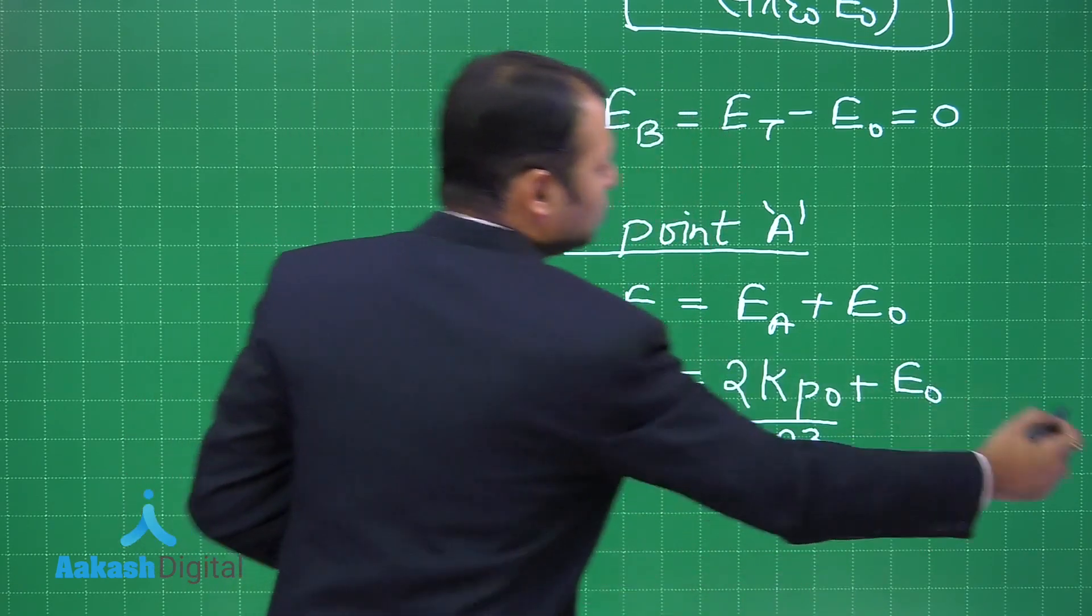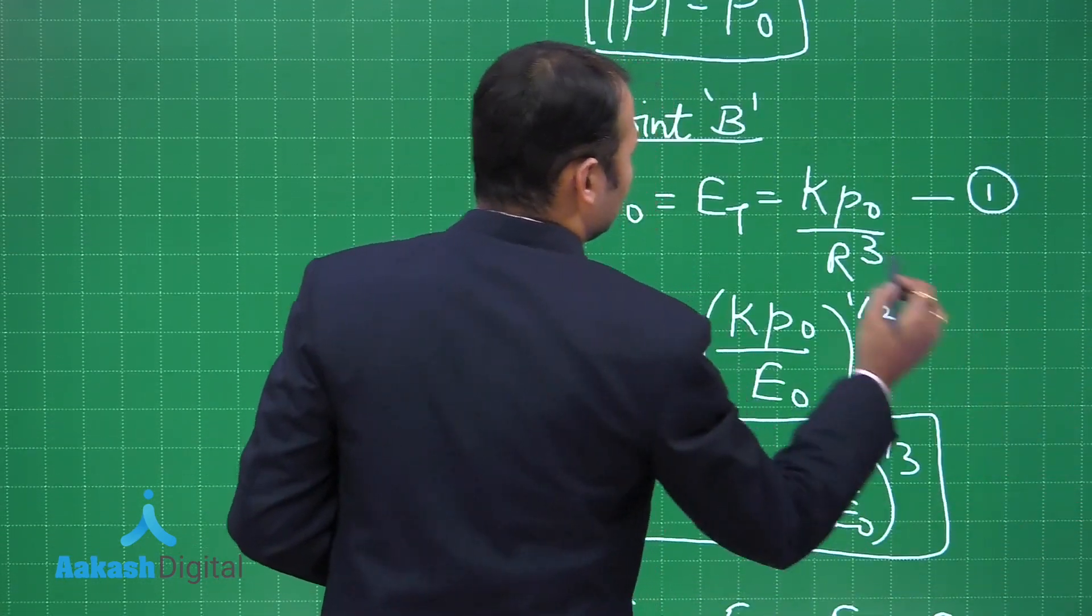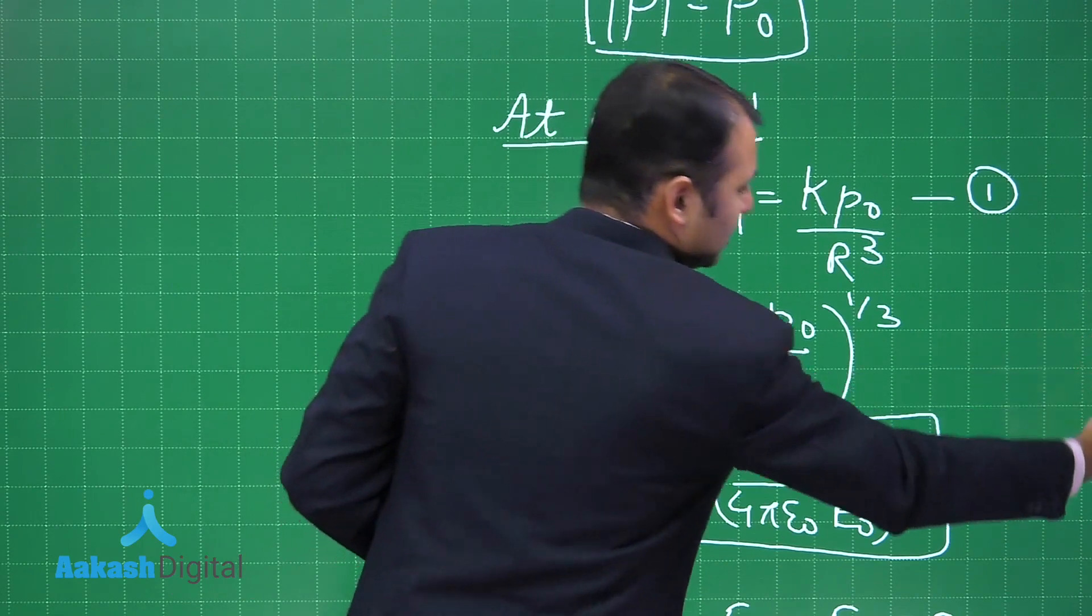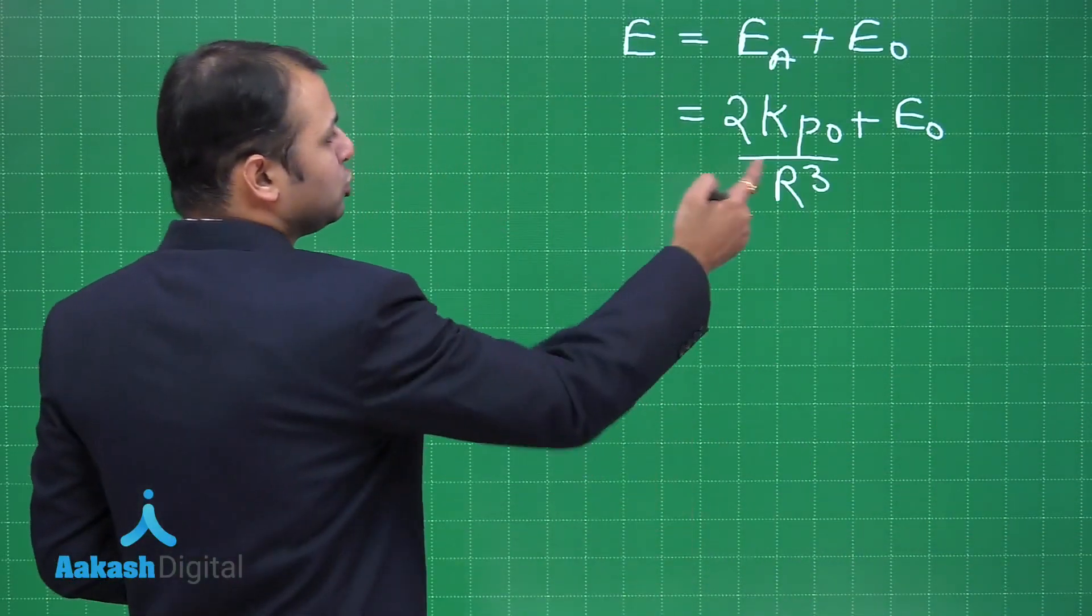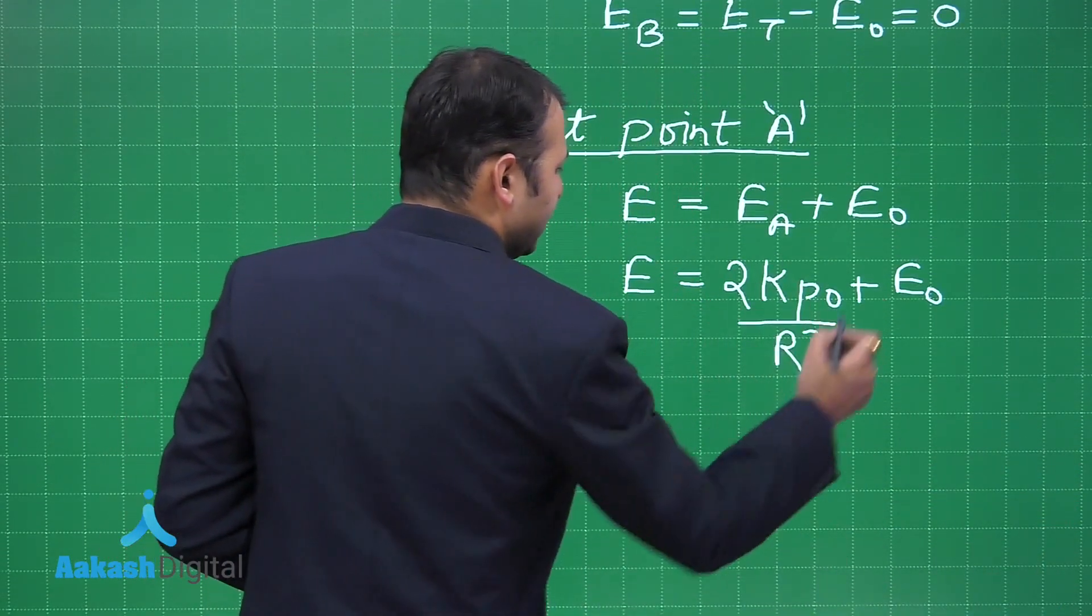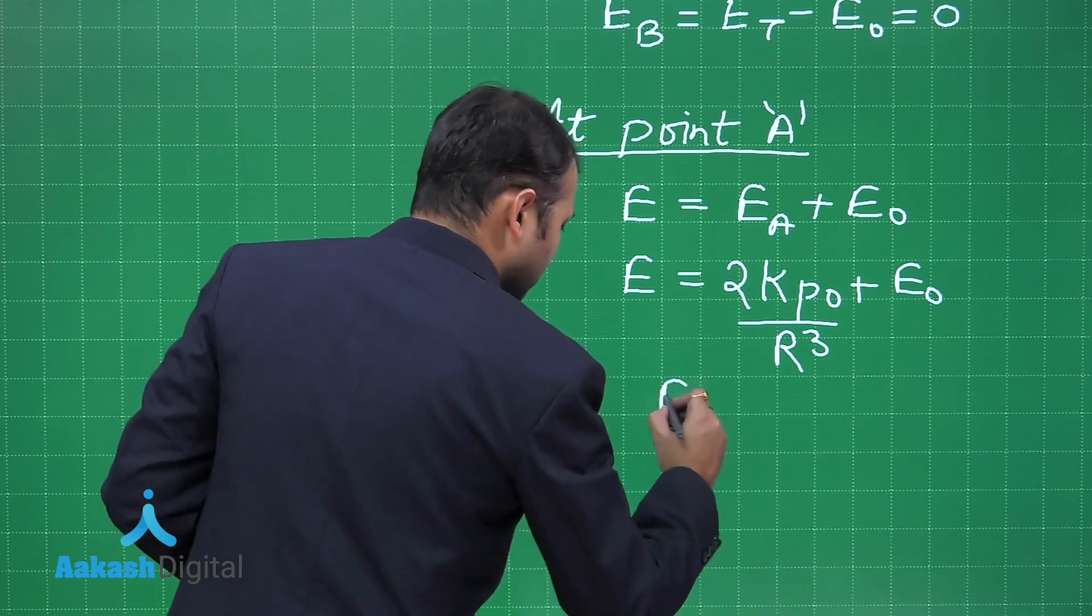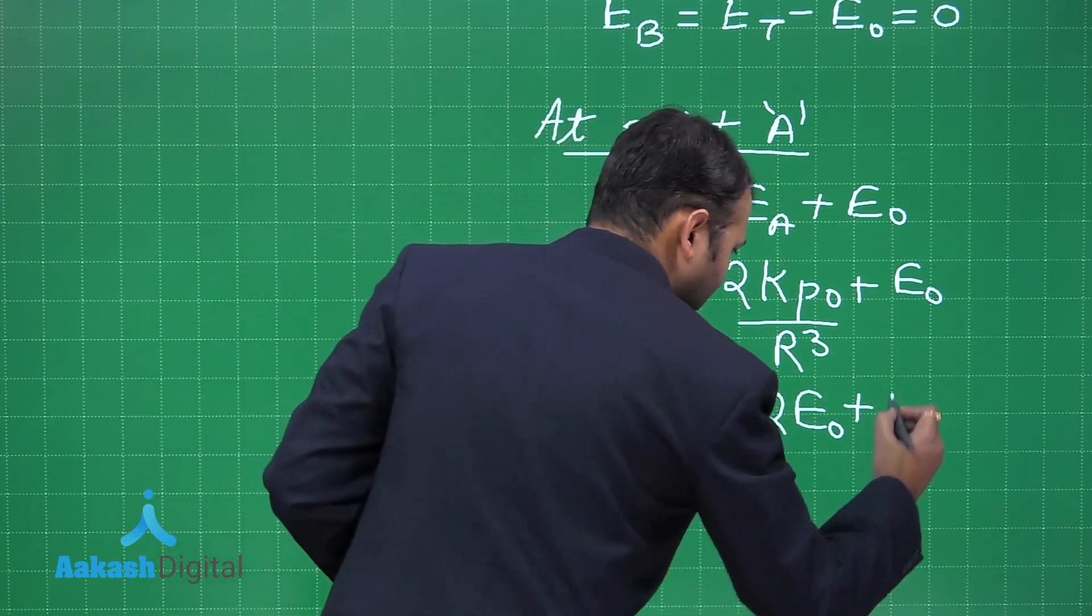So as you have just seen here that kP₀/R³ equals E₀. In that case, 2kP₀/R³ can be written as 2E₀. So in that case, here this kP₀/R³ becomes E₀.